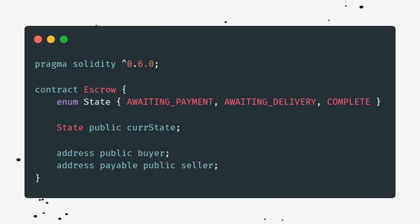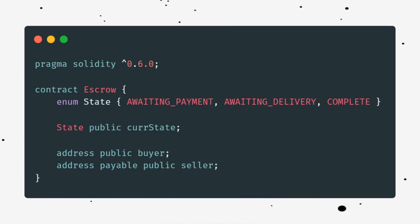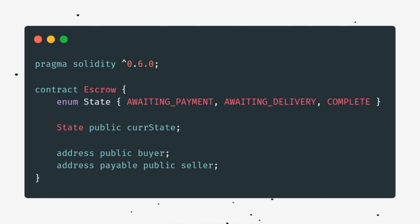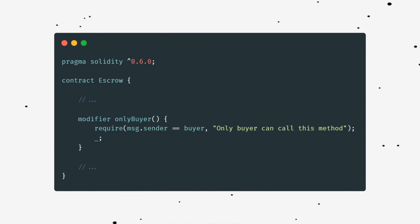Let's code a very simple contract now. First, we'll create a contract called Escrow. Next, we'll define an enum type with three states: awaiting payment, awaiting delivery, and complete. We'll create a variable of that new type, as well as variables for the buyer and seller. Seller must be defined as payable because they will actually receive Ether in the end.